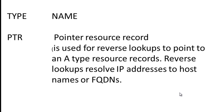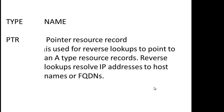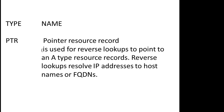Remember, the PTR record resolves IP addresses to host names, whereas the A record resolves host names to IP addresses. We want to take a look and see how we would manually add a host record or a PTR record using the DNS console.